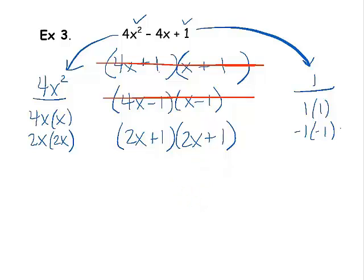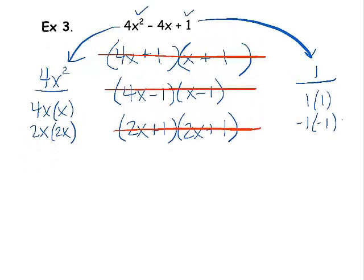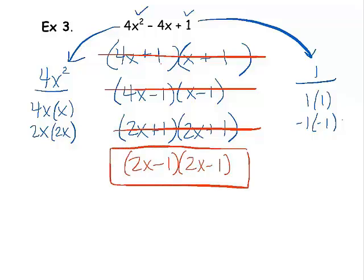Our only other option is going to be 2x minus 1 times 2x minus 1. And we could check it out. 2x times negative 1 is negative 2x. Negative 1 times 2x is negative 2x. That makes a total of negative 4x. Now it's time for you to try some practice.